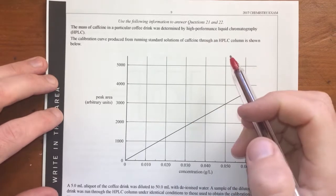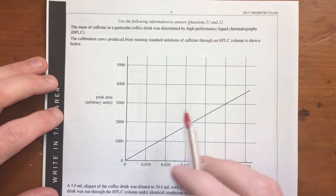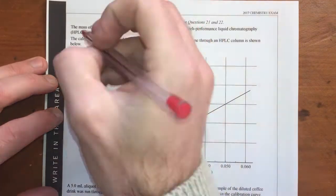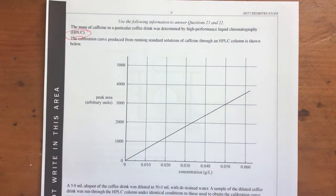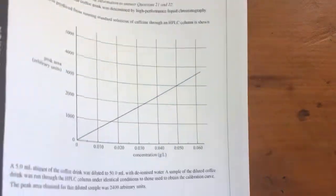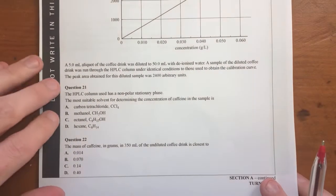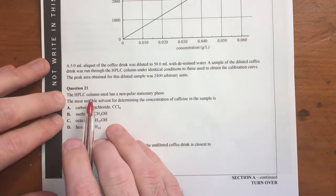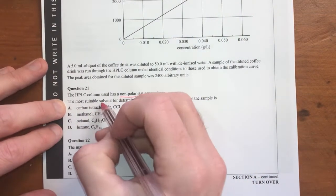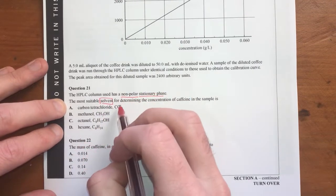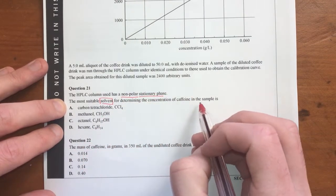Question 21 and 22, by the looks of it, is to do with this graph. It's HPLC by quick glance at this. So this is a calibration curve. I'm going to add it stuck straight into question 21 and see if I need to use the data there. The HPLC column has a non-polar stationary phase. The most suitable solvent, which is the mobile phase, for determining the concentration of caffeine in the sample is what?